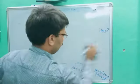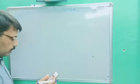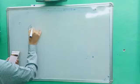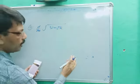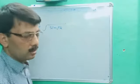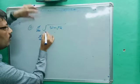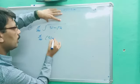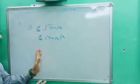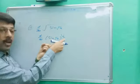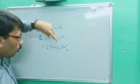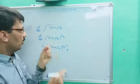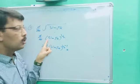Eleventh question, which is a little difficult: d/dx of √(sin(√x)). We can use direct method. Writing the outer root as power 1/2: d/dx of [sin(√x)]^(1/2). First solve the power: bring down 1/2, so we get 1/2 · [sin(√x)]^(1/2 - 1), then multiply by the derivative of the inside.